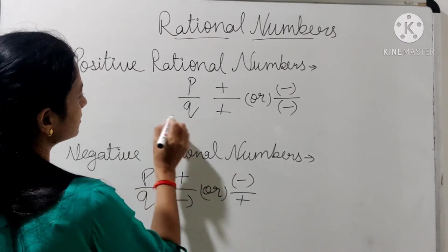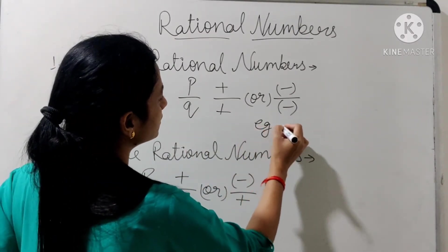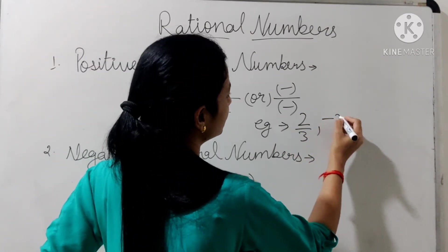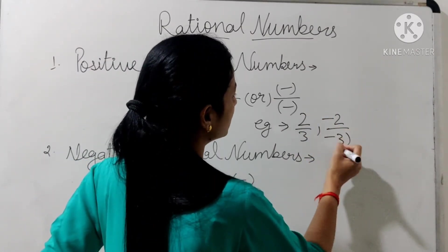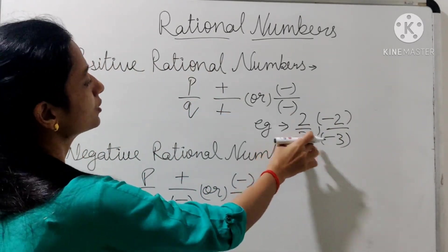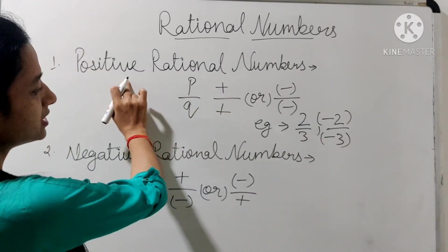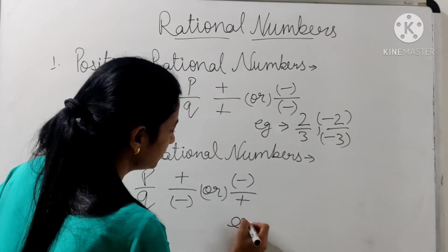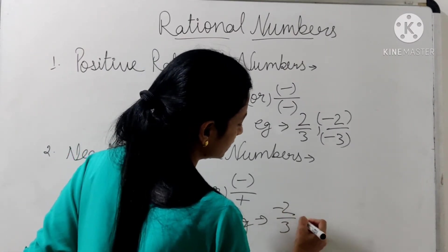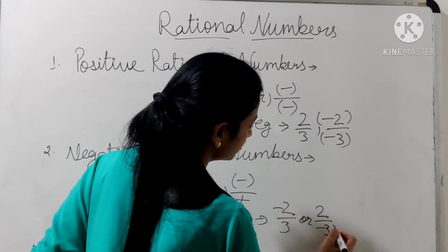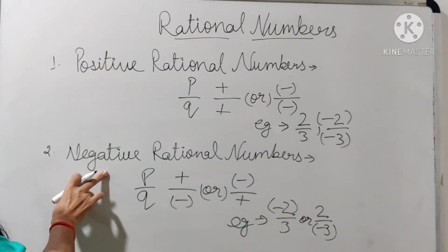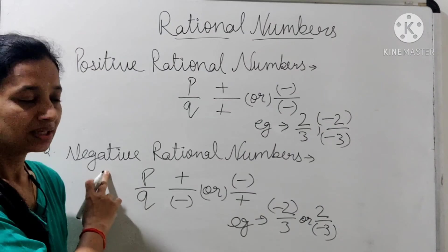Example लेते हैं. 2 by 3 और minus 2 by minus 3 — यहाँ पर दोनों के sign same हैं, यहाँ भी दोनों के sign same हैं, तो यह दोनों हो गए हमारे positive rational numbers. और 2 by minus 3 — यह हो गए हमारे negative rational numbers.